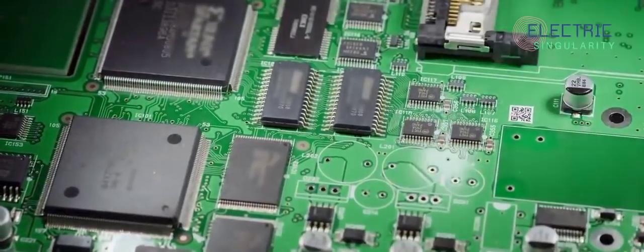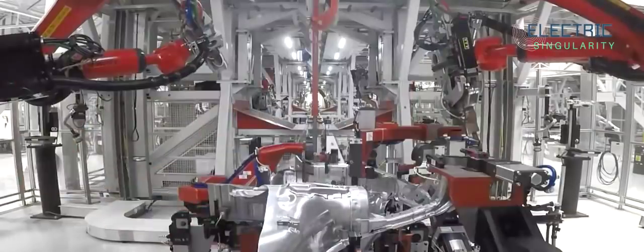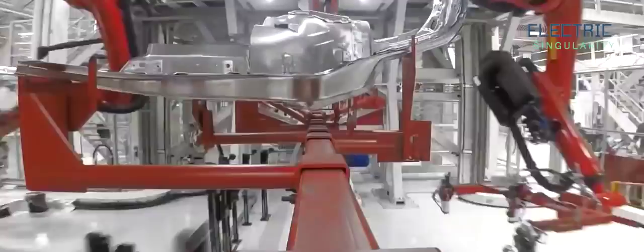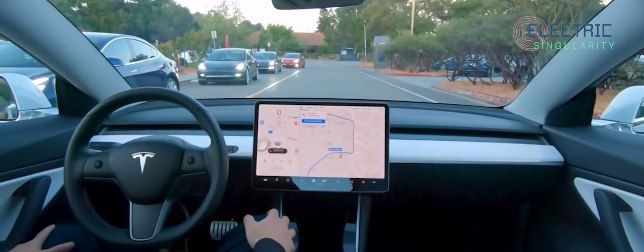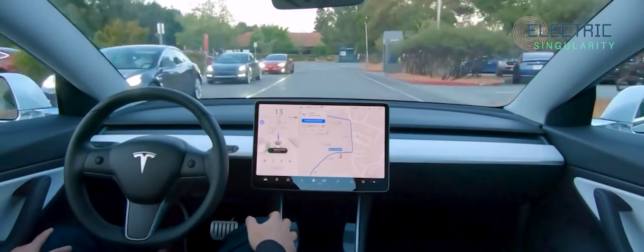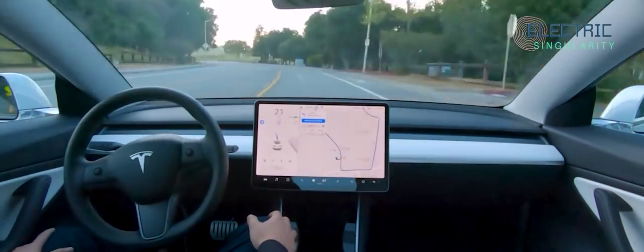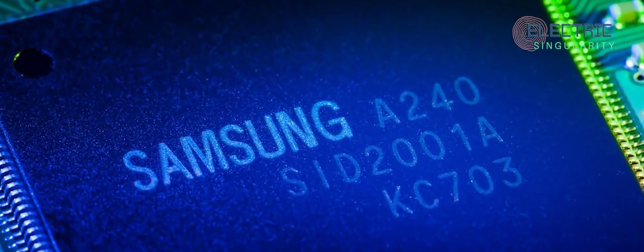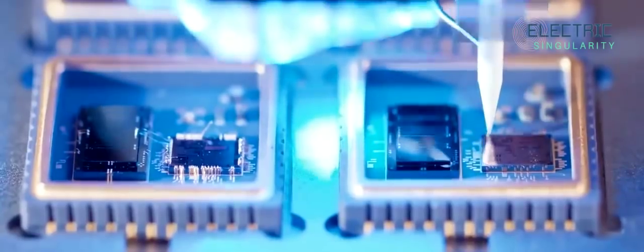Tesla uses several chips inside its vehicles for different control systems and its infotainment system. Most famously, the automaker uses a chip that it designed itself for its self-driving software. That chip is produced by Samsung, but it was designed in-house by Tesla.